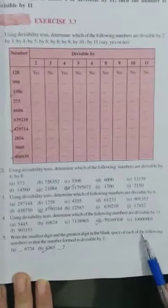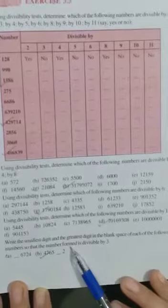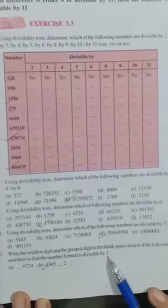Yes students, now we will continue our exercise 3.3 and it is question number 5. We will see the statement we have. In question number 5, write the smallest digit and the greatest digit in the blank space of each of the following numbers so that the number form is divisible by 3.